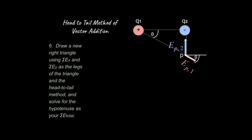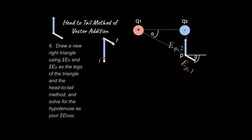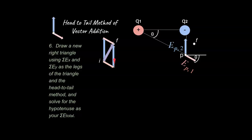Here's where we apply the head-to-tail method of vector addition conceptually. We draw a new right triangle using the sum of the x-vectors and sum of the y-vectors as legs. Starting with one vector's head at the tail of the other gives us the resultant. The order doesn't matter — you get the same resultant regardless — and trying to add them without this method won't make sense.